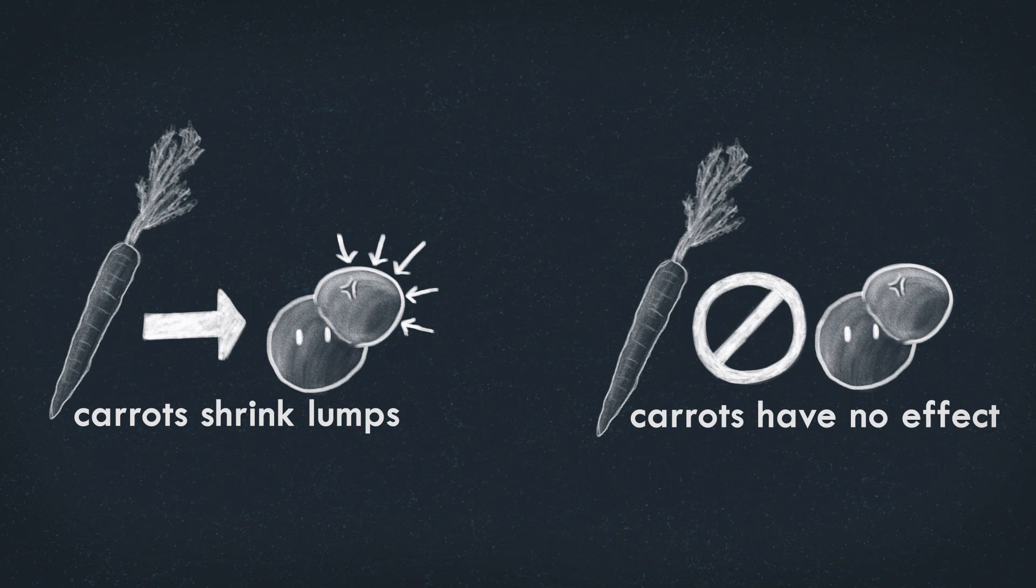You know, if we're in a world where carrots do shrink lumps, how would that world look? What observations could we expect to make? The problem with these is that they're hard to verify or falsify, even on an individual level, because of the noise.